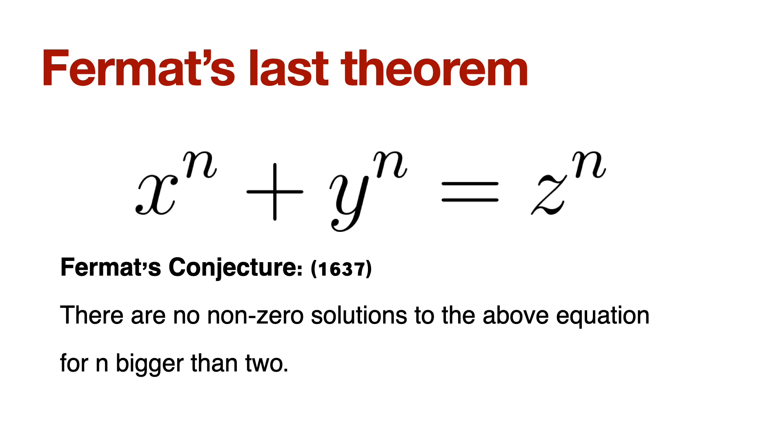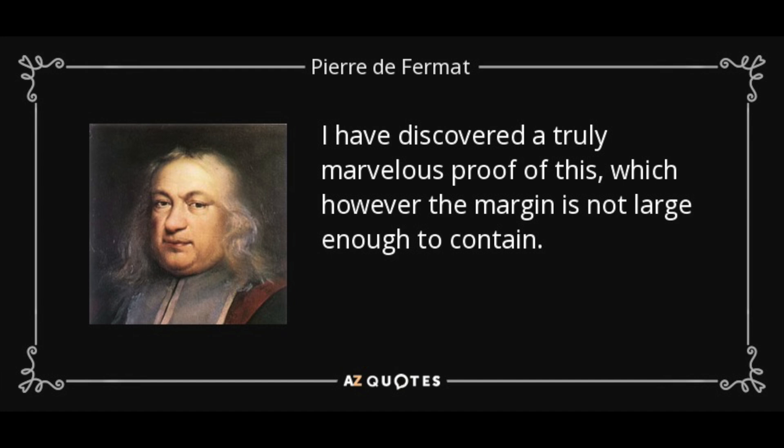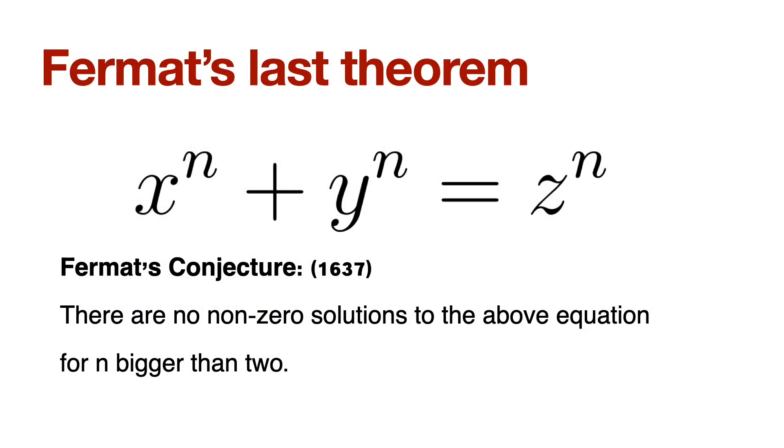He conjectured that it is not possible. In fact, he just didn't conjecture. He essentially teased the whole mathematical community for hundreds of years by saying that, oh, I have a truly marvelous proof of this assertion, but the book I am reading has a margin that is too small to contain the proof. Now, first of all, this problem on the face of it looks like even a high schooler can understand it, right? And here is Fermat saying, hey, I have a solution for this. So obviously it sent all the mathematicians into this kind of a chase where everybody's trying to prove this theorem.